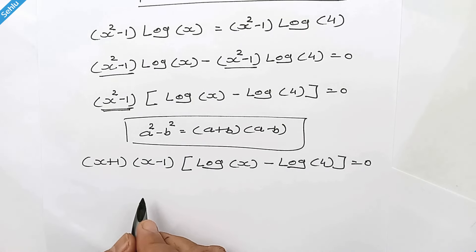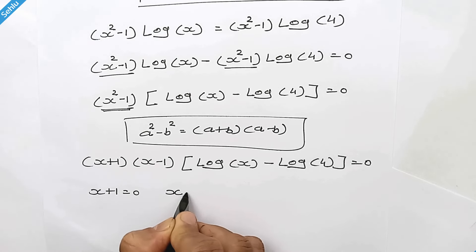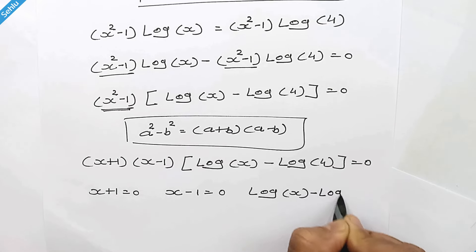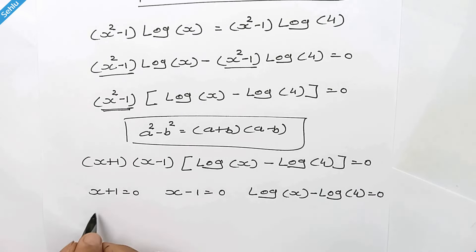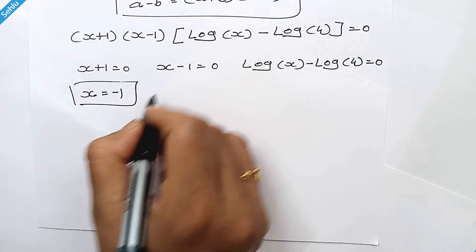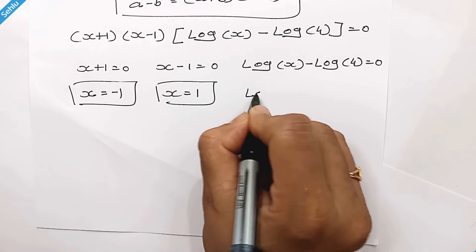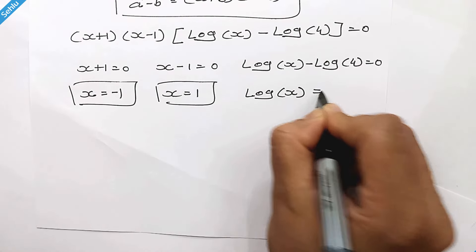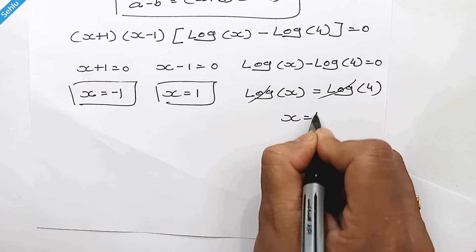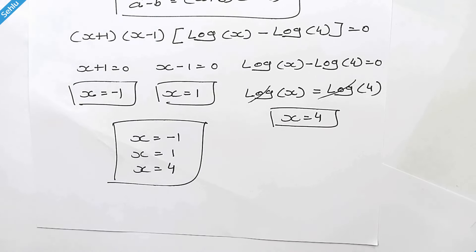So here we have three possibilities: x plus 1 is equal to 0, or x minus 1 is equal to 0, or log of x minus log of 4 is equal to 0. From these we get x is equal to negative 1, x is equal to 1, and moving log of 4 to the right hand side gives log of x is equal to log of 4, so x is equal to 4. These are the answers. Thanks for joining.